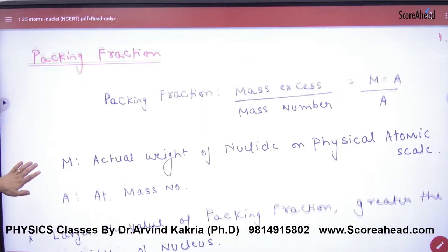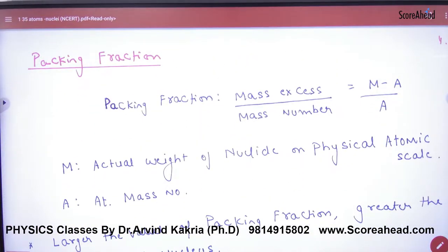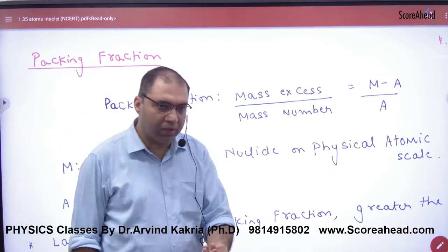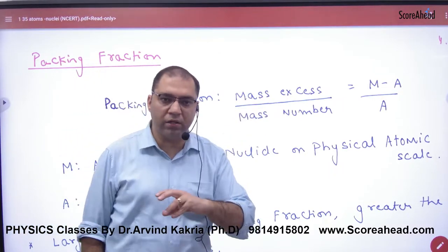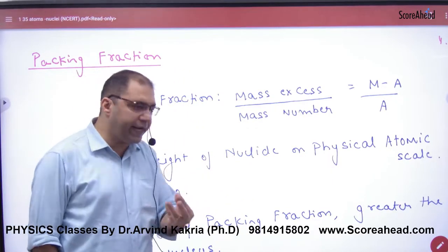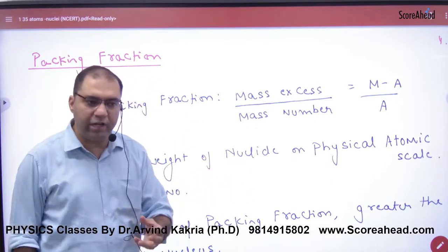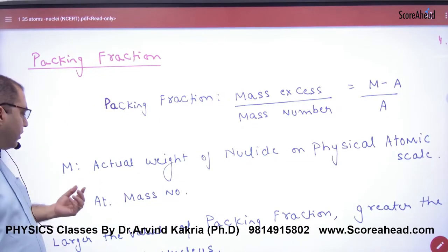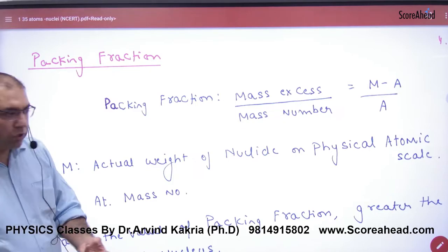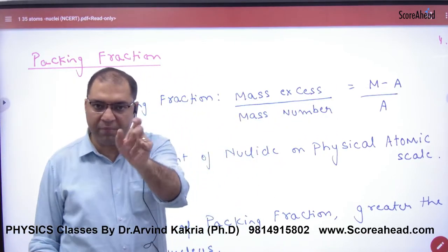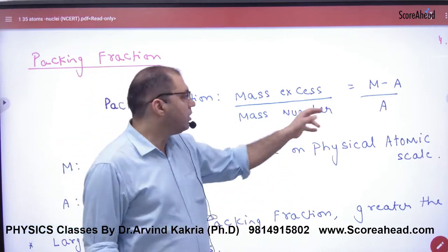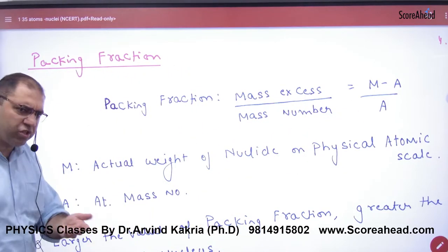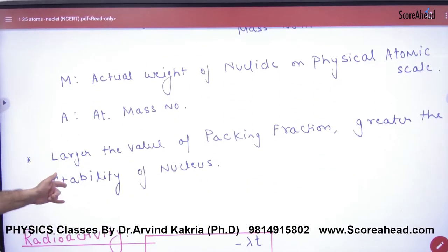Next is Packing Fraction. If you have any atom, the actual mass of the nuclide on the physical atomic scale is M, and the atomic mass number is A. The change of mass is M minus A. So Packing Fraction is defined as (M - A) divided by A. This ratio is the Packing Fraction.